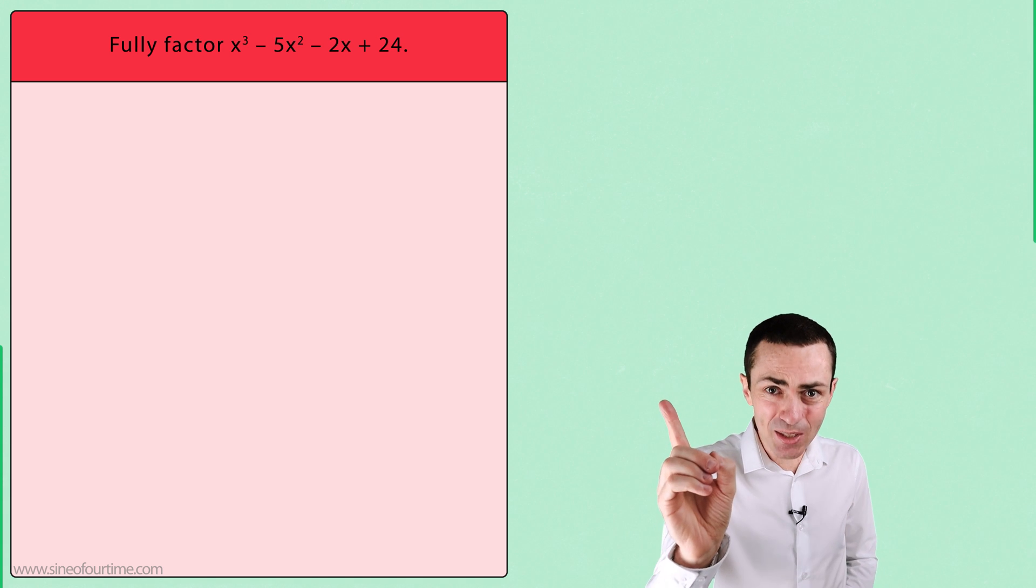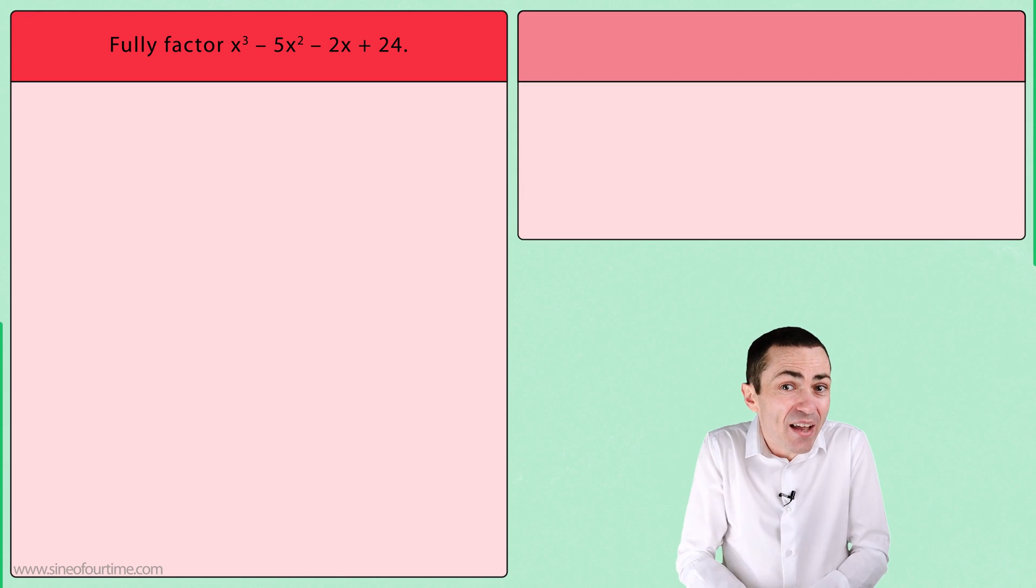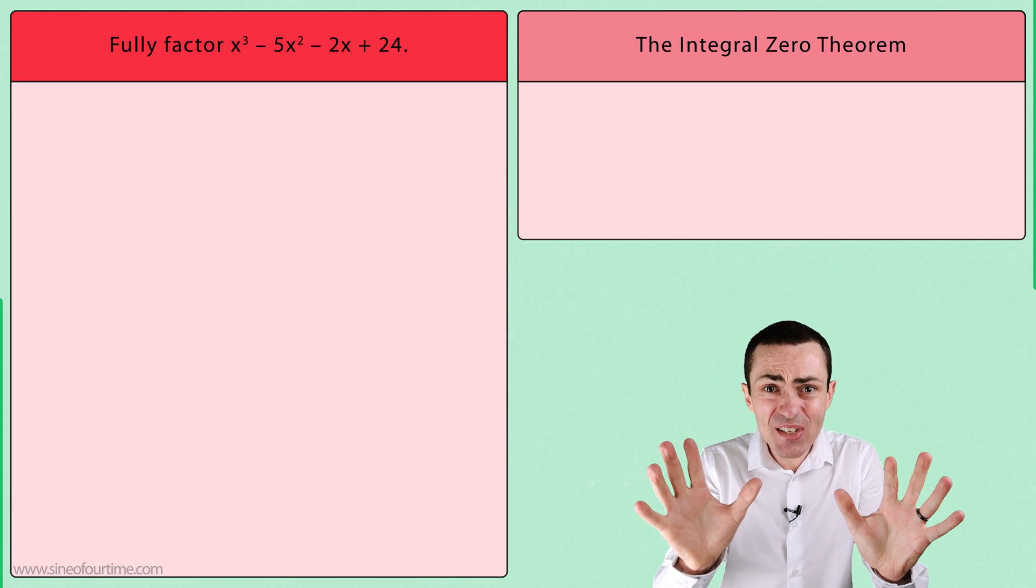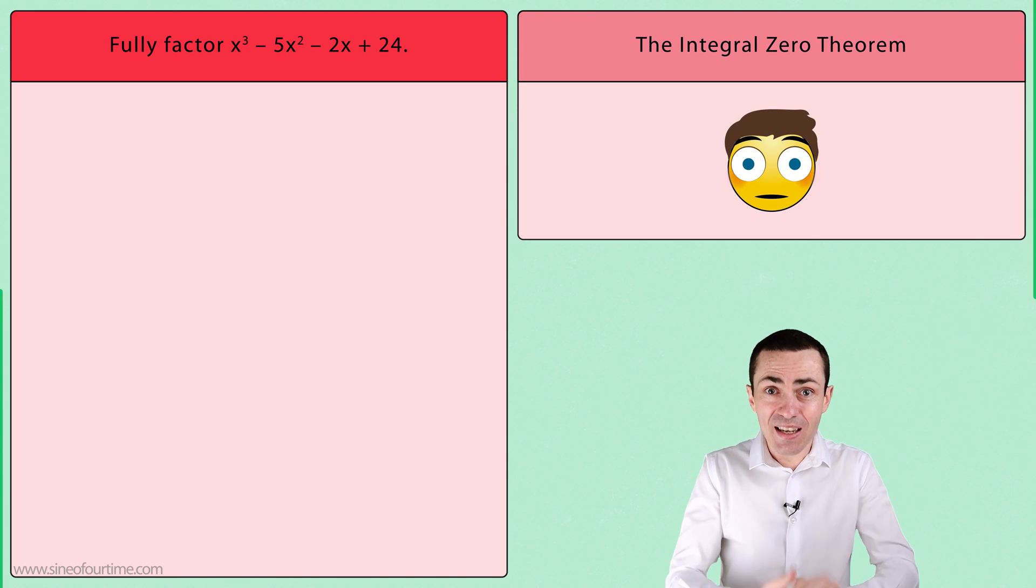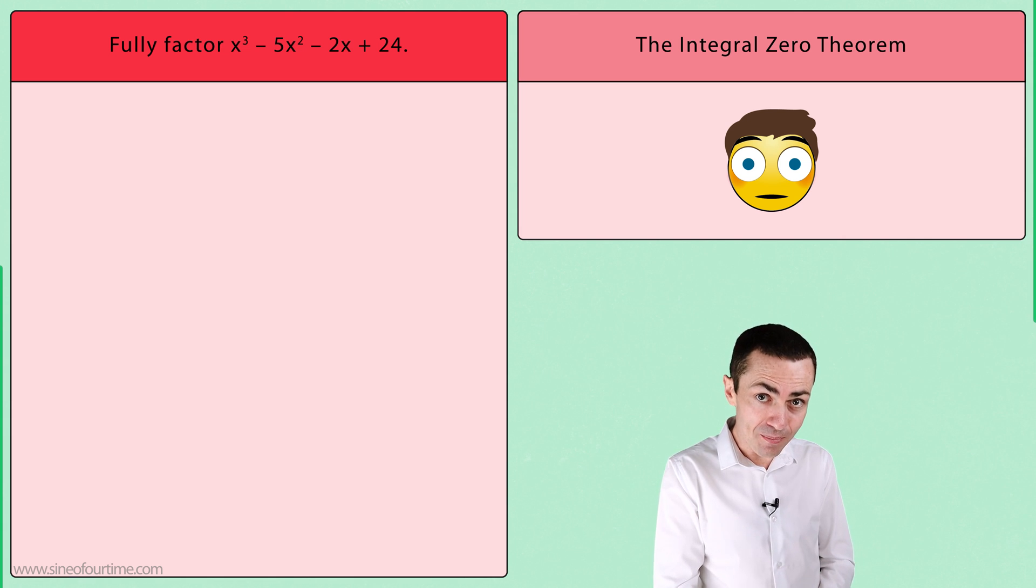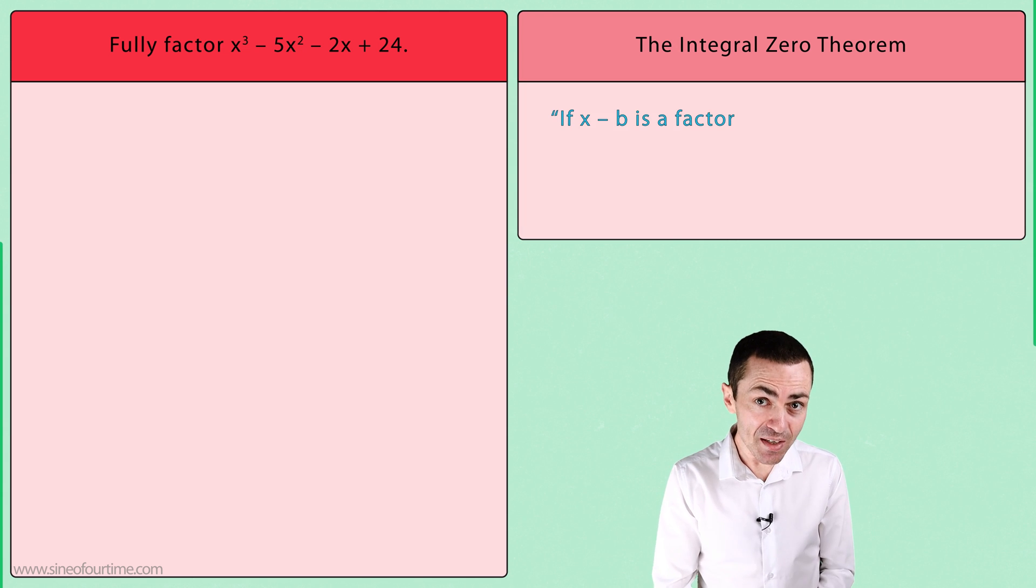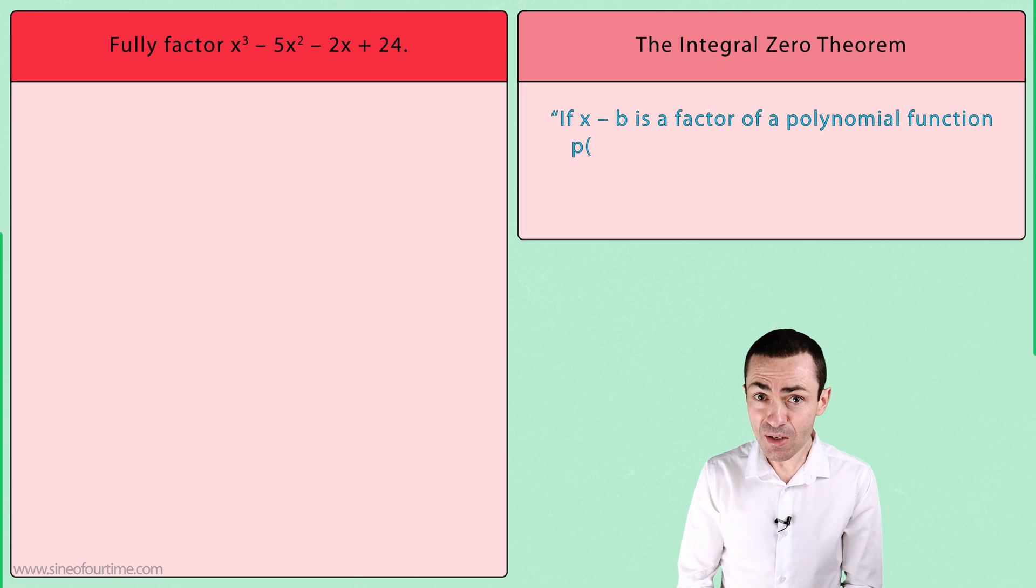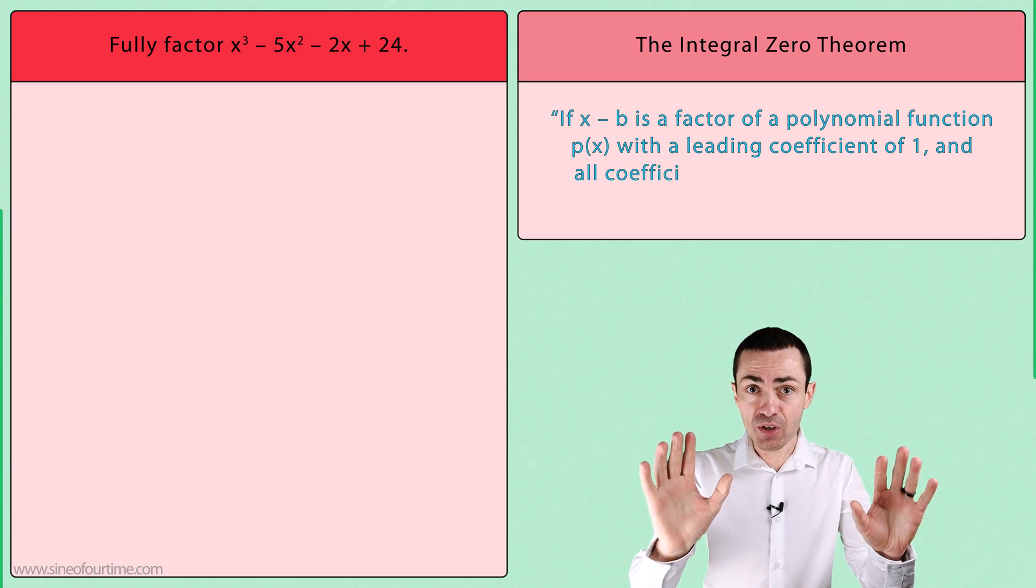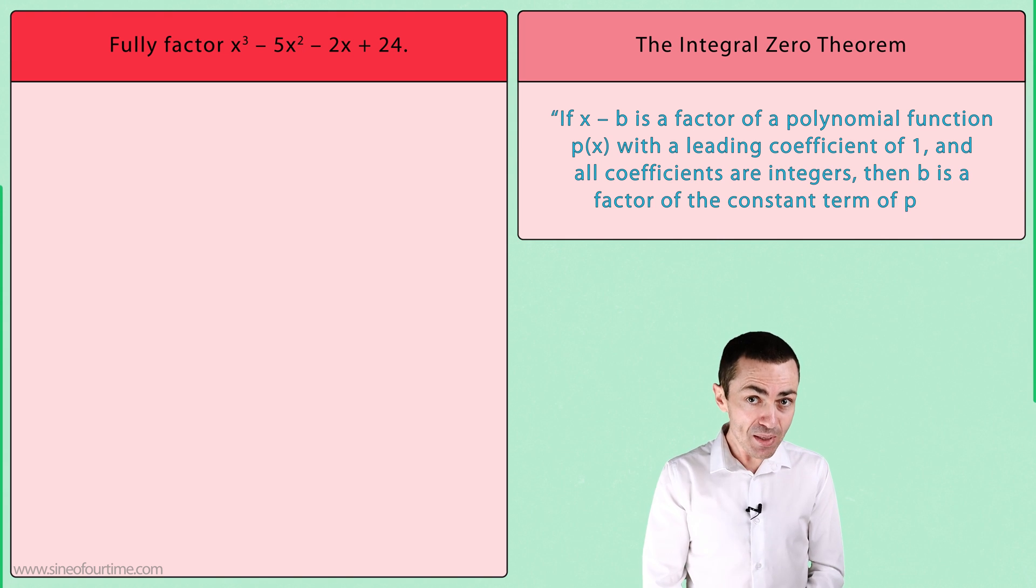But what if we were asked to factor a polynomial and not given any set of binomials to test? It's time to be brave and venture into the unknown, but don't worry because I'm going to show you exactly what we need to do. Let's consider a question like this where we are asked to fully factor x³ - 5x² - 2x + 24. Before we even tackle a problem like this, I have to introduce you to yet another theorem and this one is called the Integral Zero Theorem.